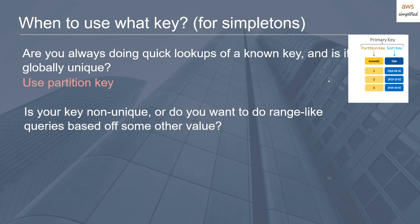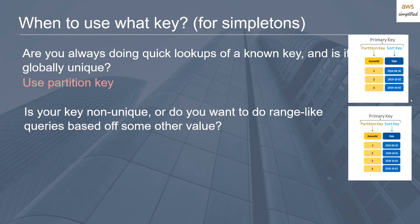And the second question is: is your key non-unique? Or do you want to do range-like queries based off some other value? By range-like queries, I mean all the things between these two dates, greater than or less than something, those kinds of queries. And recall that that's this example. If you have duplicated values here, so two rows with the same partition key, and if that's the case, then you need to use a partition key and a sort key. Now for most people, you can pretty much stop there.